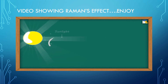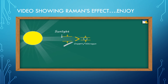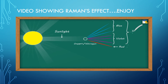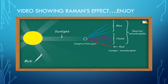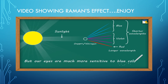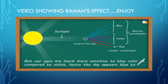However, when sunlight strikes particles of oxygen and nitrogen, which are smaller than the wavelength of sunlight, the colors of sunlight having shorter wavelengths — that is, blue and violet — are much more scattered than colors having longer wavelengths. But our eyes are much more sensitive to blue color as compared to violet. Hence, the sky appears blue to us.